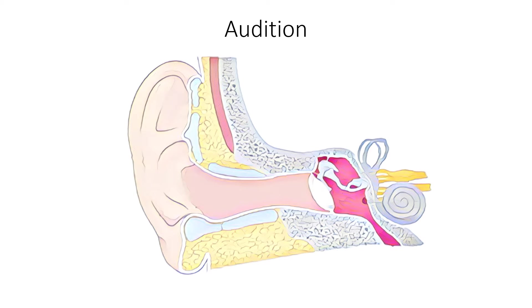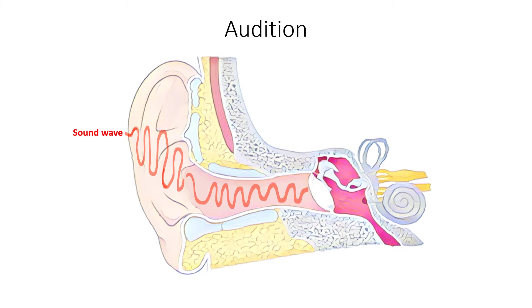Now let's look at the process of hearing. Auricle collects sound waves from the environment and passes them along the ear canal. Sound then strikes the tympanic membrane, making it vibrate. Vibrations of the tympanic membrane are transmitted along three ossicles: malleus, incus, and then stapes.